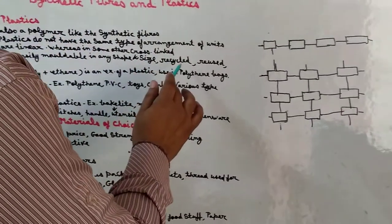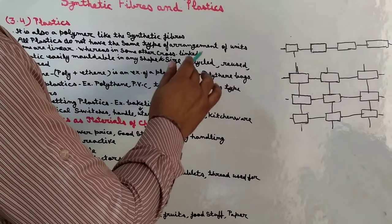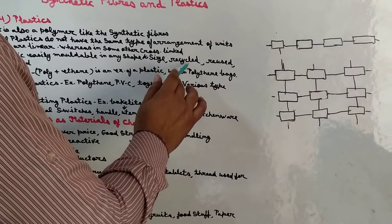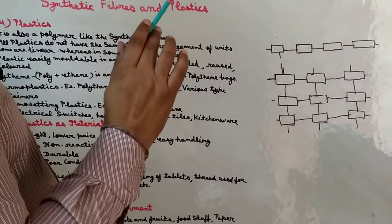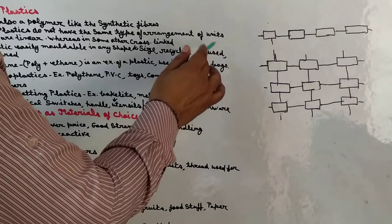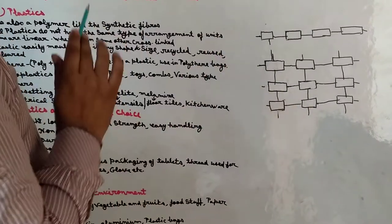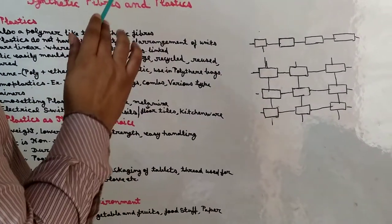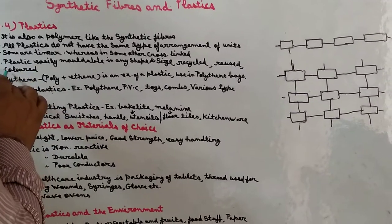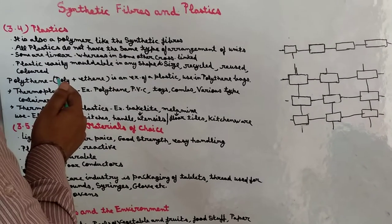दूसरा है recycle — अर्थात plastic से बने wear को दुबारा plastic wear में convert किया जा सकता है, जैसे पुरानी old chairs को दोबारा chair या दूसरे items बना सकते हैं. Reuse भी possible है — जैसे cold drink की bottle को water bottle के रूप में use किया जा सकता है. Plastic के items अनेक colors में available होते हैं.